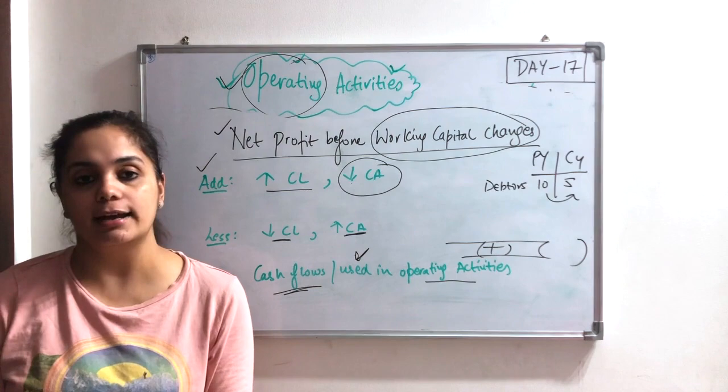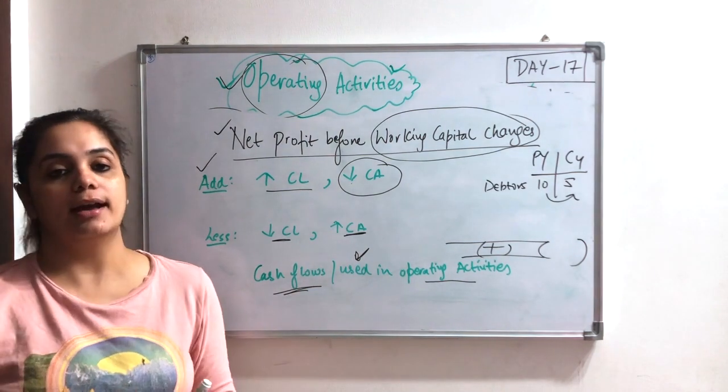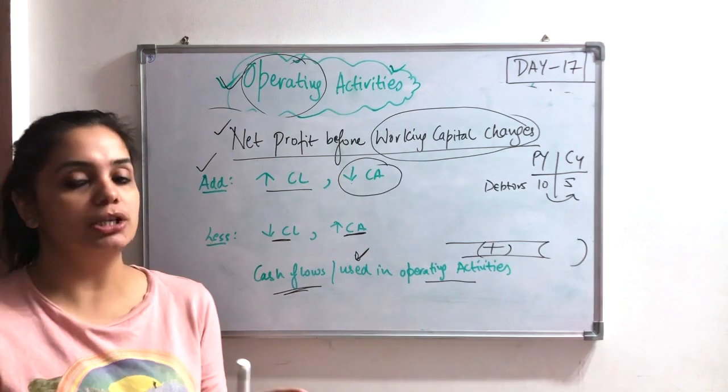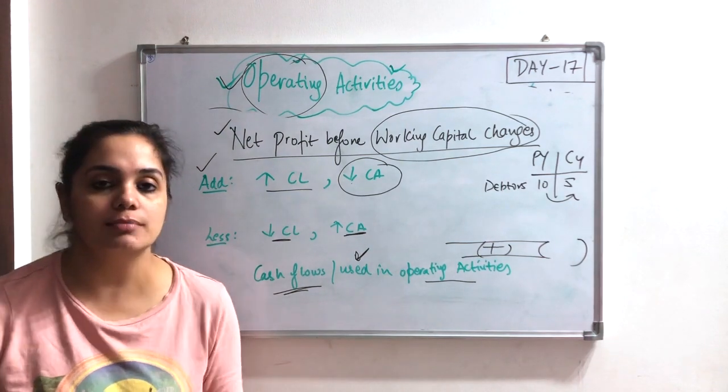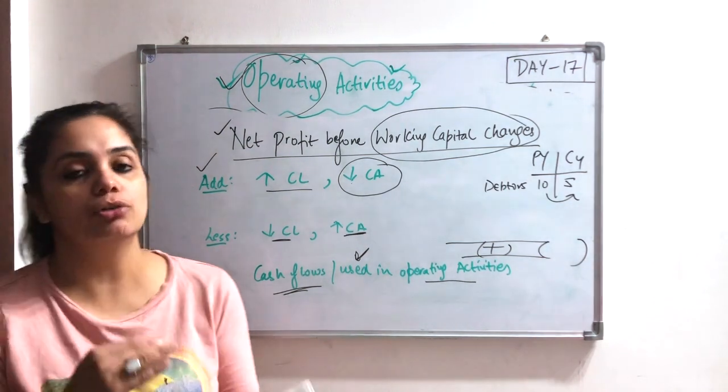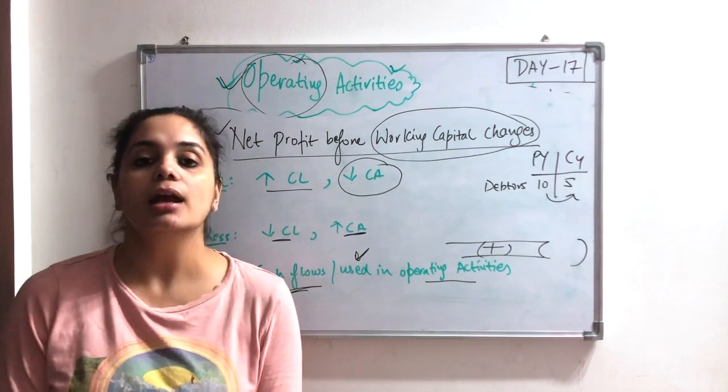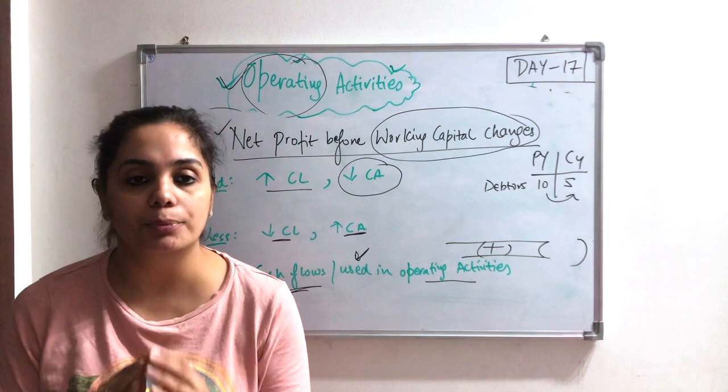So that's all for operating activities. It was so much operating activities, I know. It was a little confusing. But if you logically think that what way I have removed net profit, after that what changes, and finally I have changed in working capital, then you will not have any problem.